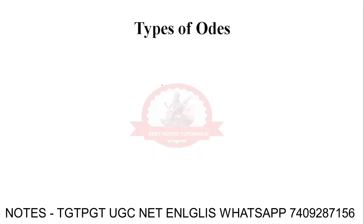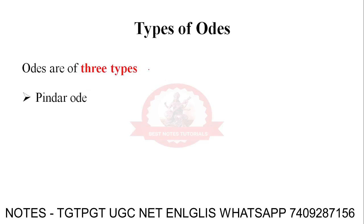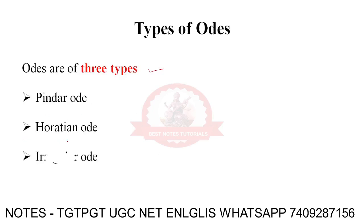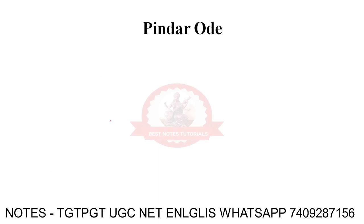Now let's talk about types of odes in English literature. There are three types of odes: first is Pindaric odes, second is Horatian odes, and third is irregular odes. We will see examples of these odes one by one.